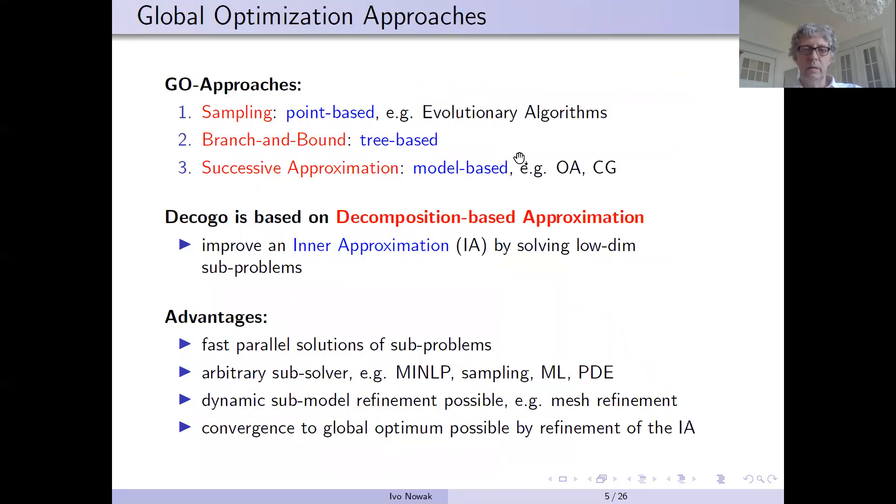We have three main approaches for solving global optimization problems. The first is based on points like evolution algorithms, or it's based on tree, this is the classical branch and bound. And our method is based on model approximations.